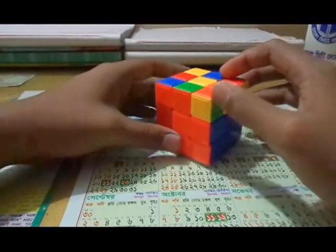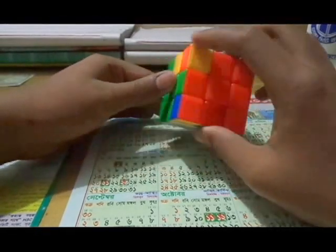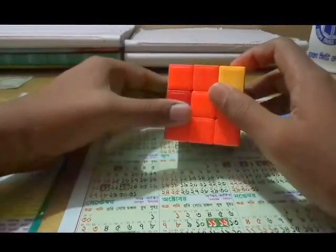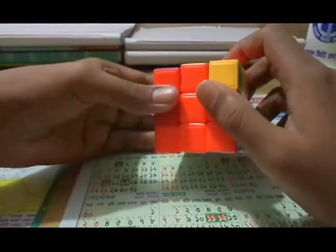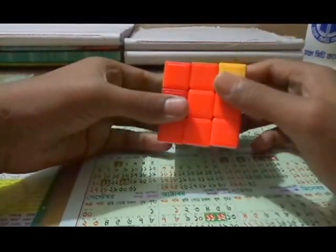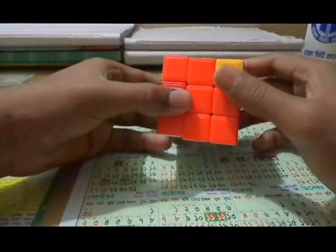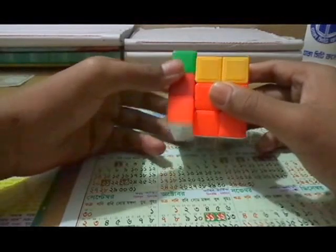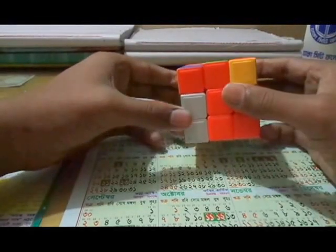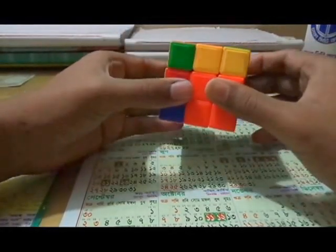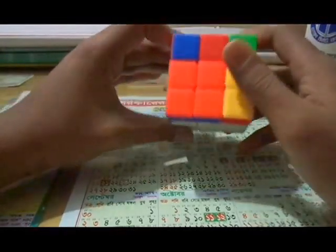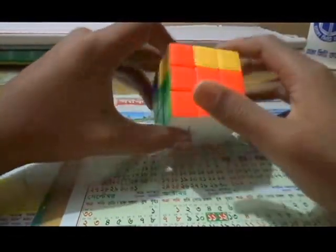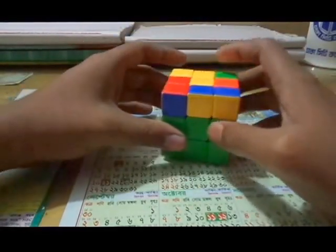I take the cube in my hand and let me show you an example. The algorithm is: U', L', U, L, U, F, U', F'. This is the last one.